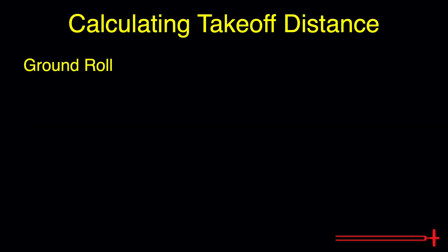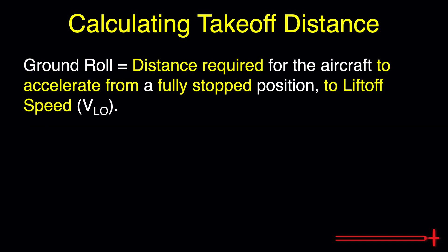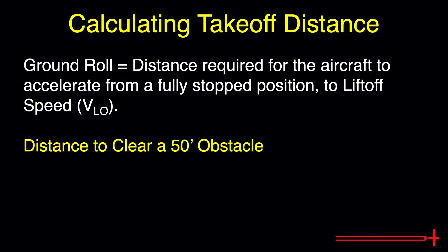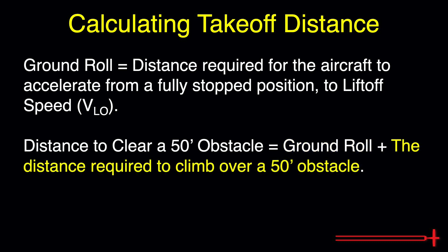Ground roll refers to the distance required for an aircraft to accelerate from the fully stopped position to lift-off speed. Distance to clear a 50-foot obstacle takes it a little further — this is the distance an aircraft would require to go from fully stopped to takeoff speed, plus the distance required to climb over a 50-foot obstacle. We should pay especially close attention to both figures when operating from relatively short fields or those with obstacles at the departure end.